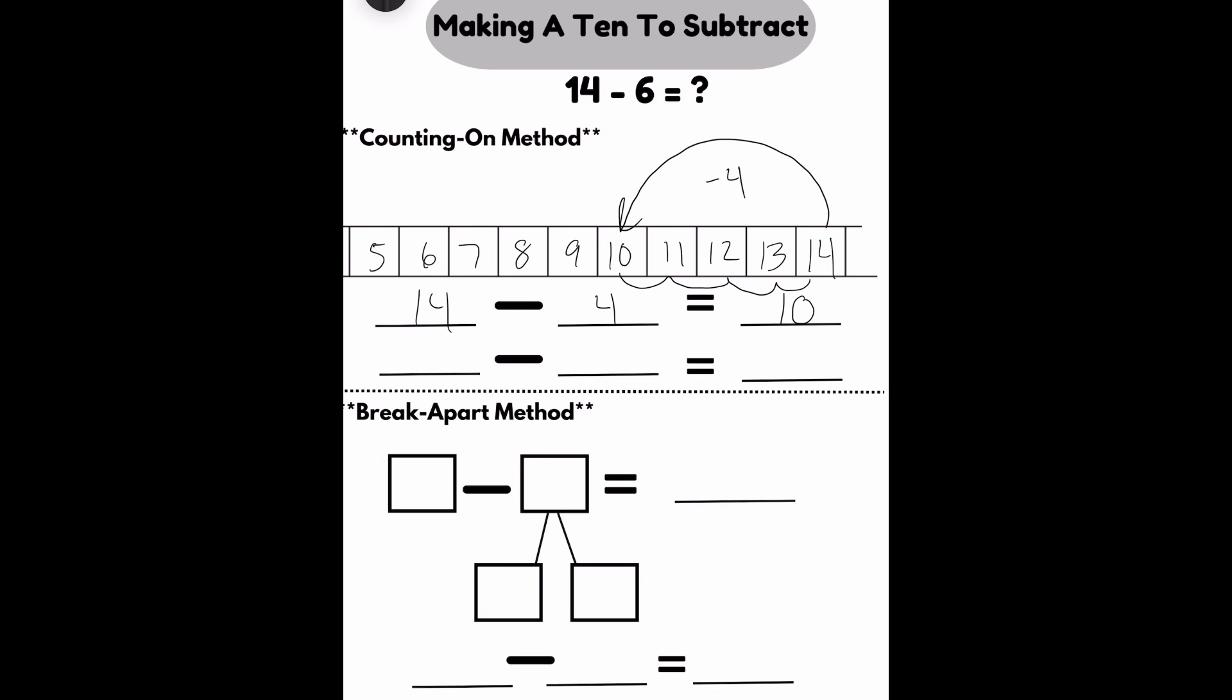14 minus 4 made 10. I've only gone back 4. I still need to go back 2 more. If I go back 2 from 10, I'm at 8. I know I started at 10. I went back 2. And now I'm at 8.